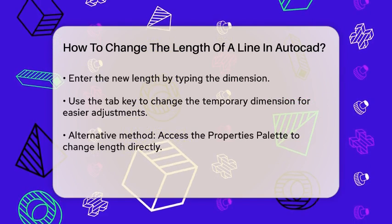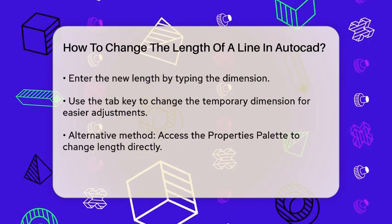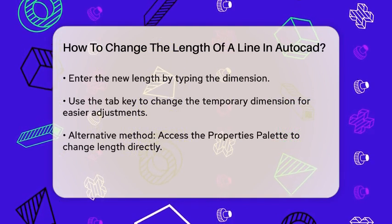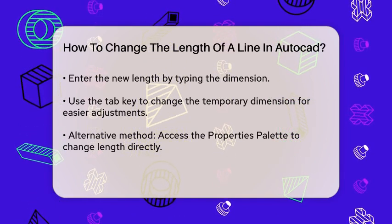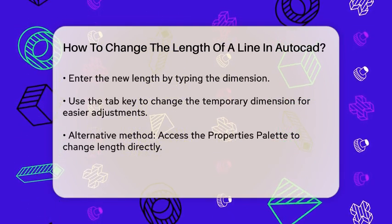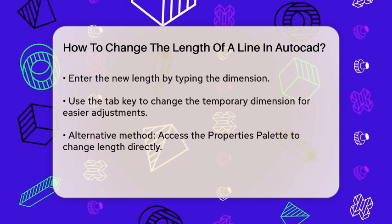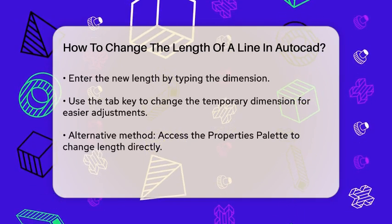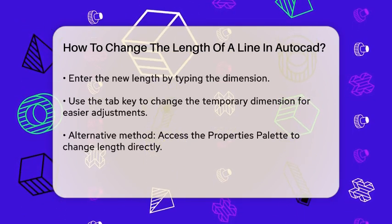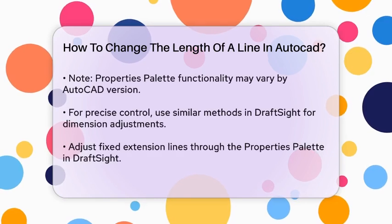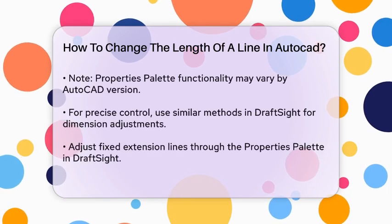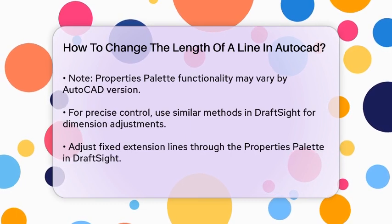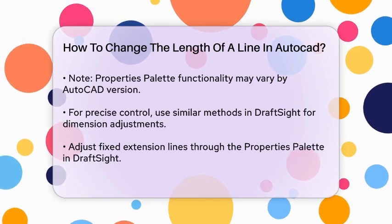Another method involves using the properties palette. This is particularly useful if you're not comfortable with the node selection method. Select the line, then go to the properties palette. Here, you can directly change the length value of the line. However, it's worth noting that this method might not be available in all versions of AutoCAD, as some users have reported it not working in newer versions.